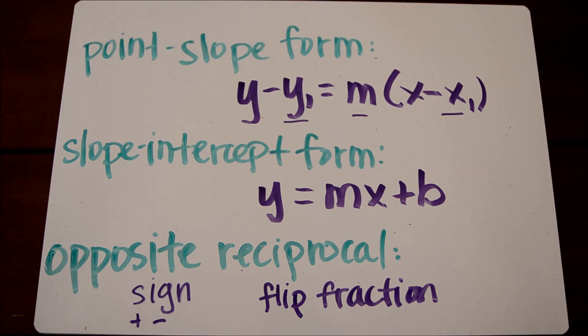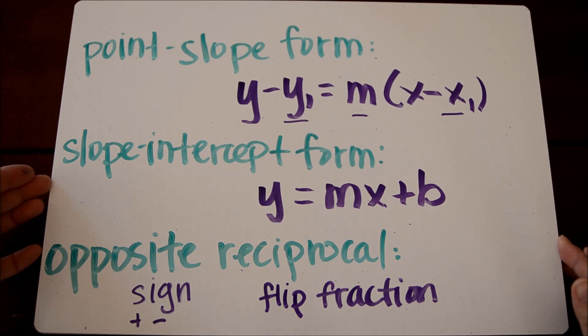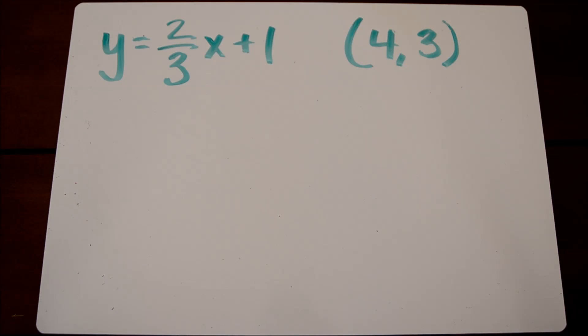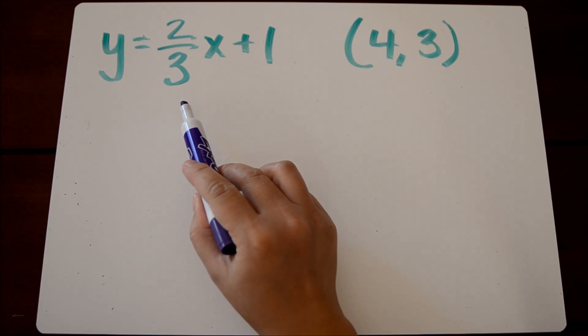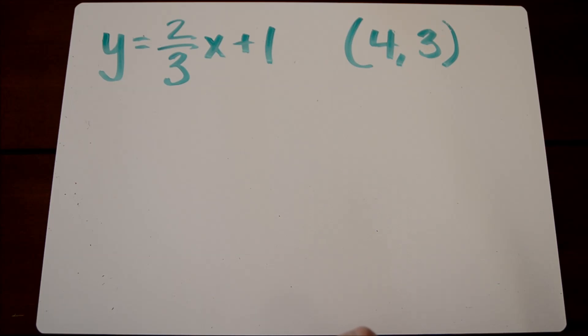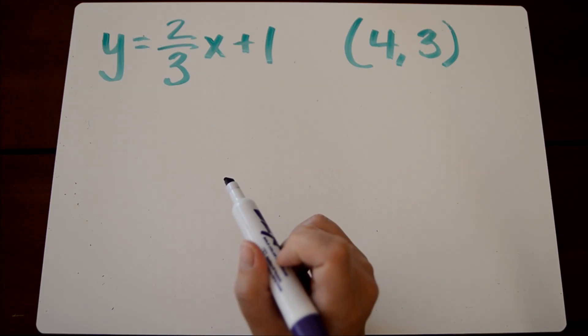Let's take a look at our first example. So if we have an equation, y equals two-thirds x plus one, and we have a point, and we're asked to write an equation that's perpendicular to this equation but goes through the point four-three. First of all, we're looking at the equation, and we need to figure out what is perpendicular to that equation.